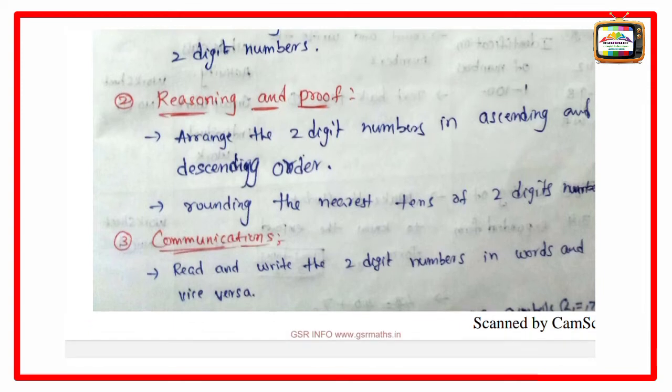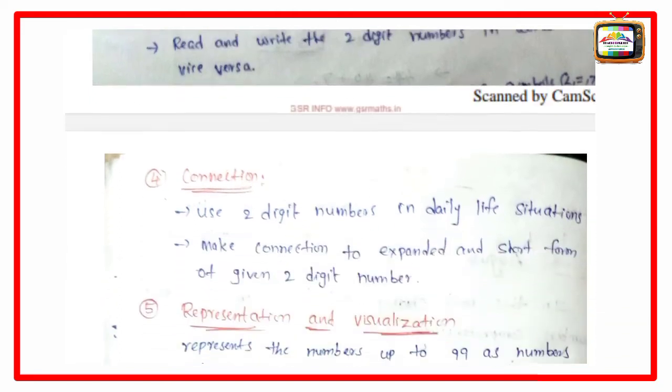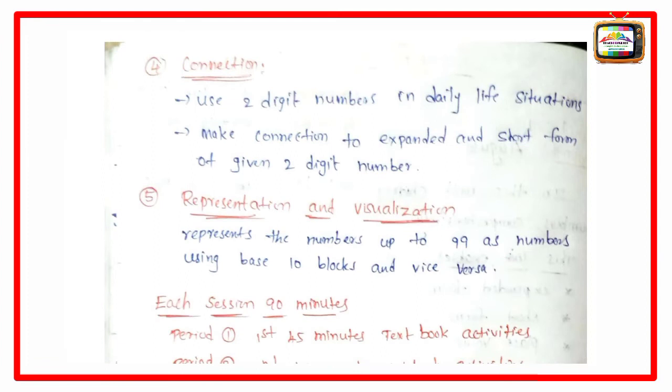Communication - read and write the two-digit numbers in words and vice versa. Connection - use two-digit numbers in daily life situations, make connections to expanded and short form of given two-digit number. Representation and visualization - represents the numbers up to 99 as numbers using base 10 blocks and vice versa.